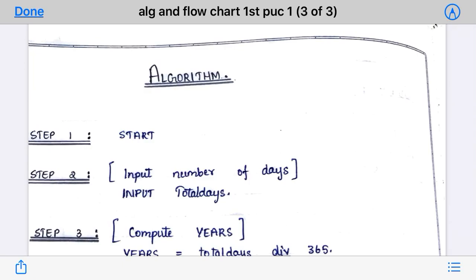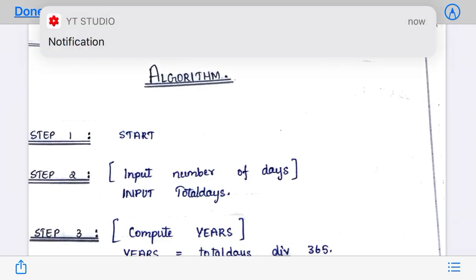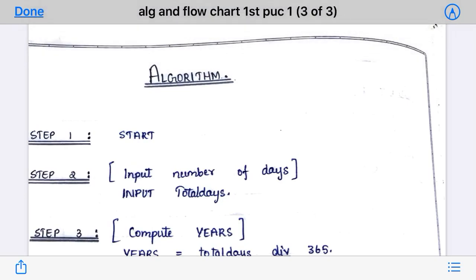Step 2 is to input the total number of days. To calculate the number of years, months, and days, you first need to input the total number of days. So the second step is to take the input of the total number of days.